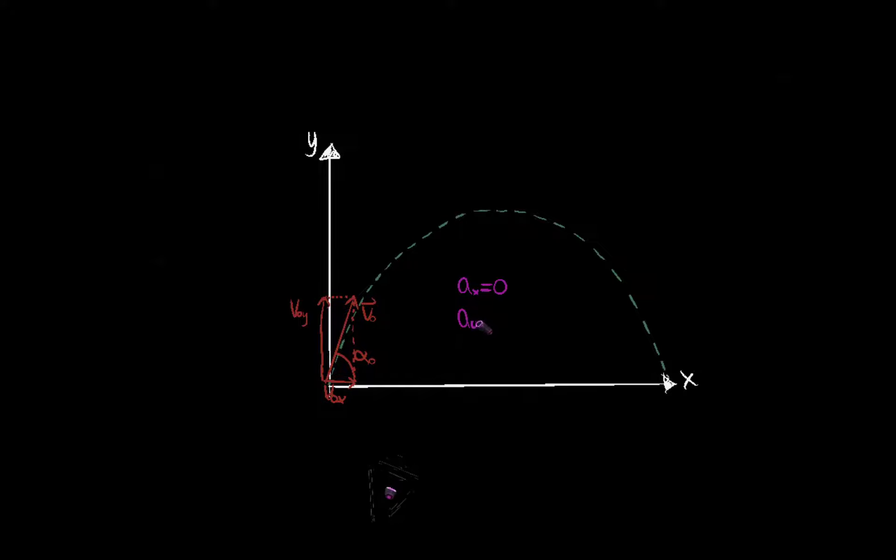A y, the acceleration in the y direction, is negative g, because this would be the positive y direction, is upwards. We could define it another way, but in the way that we've written it here, a y is equal to minus g, which is, of course, negative 9.8 meters per second squared.